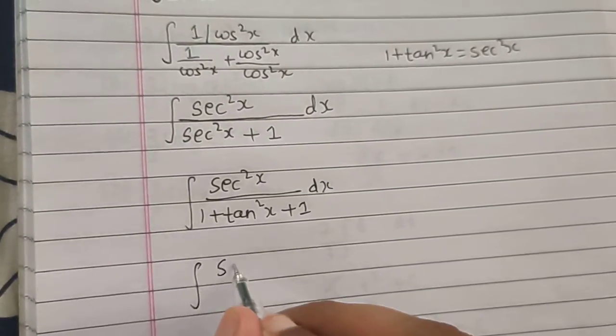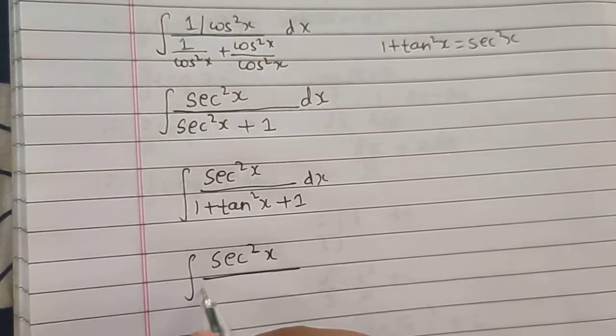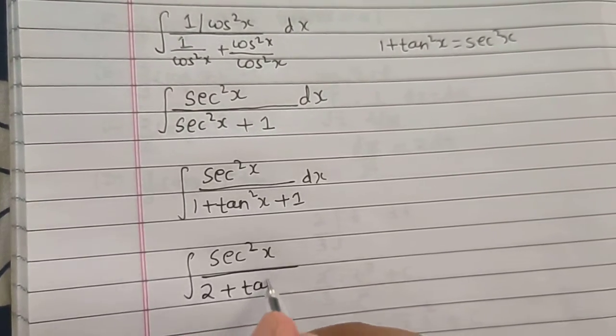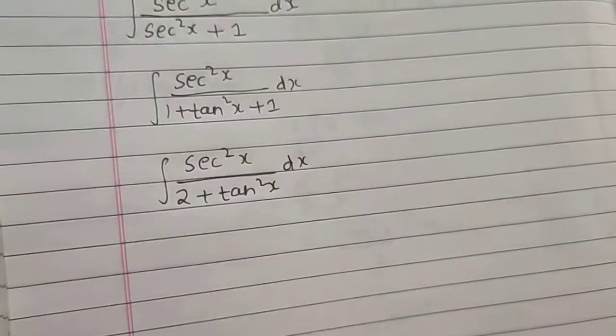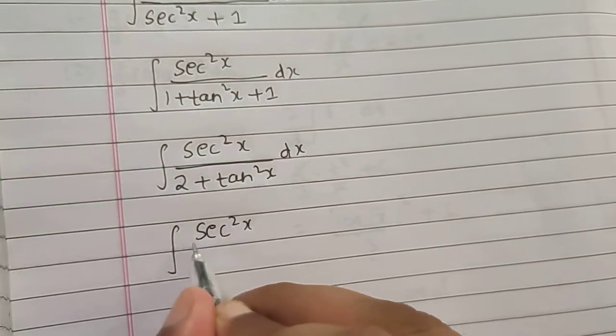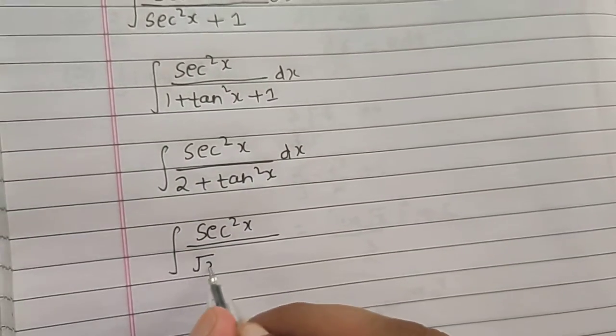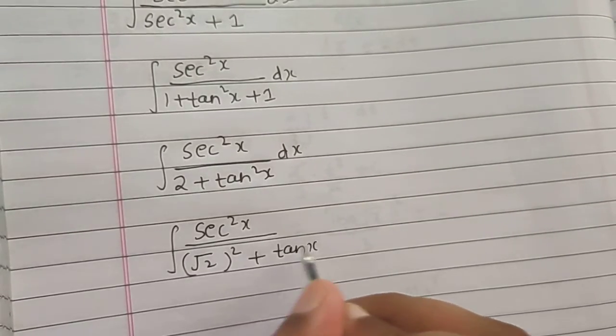So this is sec²x / (2 + tan²x). One more step: it is sec²x divided by 2, which can be written as (√2)², and this is (tan x)².